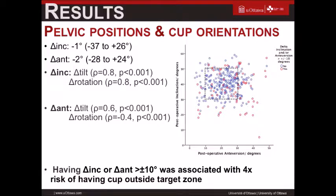If you had a change in inclination or anteversion of more than 10 degrees, you were four times more likely to have your cup outside of the safe zone.